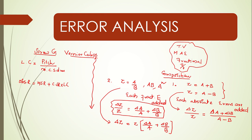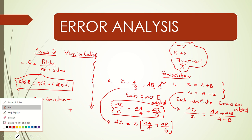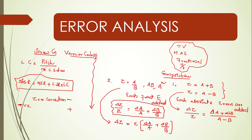In the zero-error case, the observed reading equals the true reading plus the zero error. If we have a zero correction, we subtract — a negative value. For Vernier calipers, the least count equals one main-scale division divided by the number of Vernier-scale divisions. The formula is: 1 minus the Vernier-scale division value.